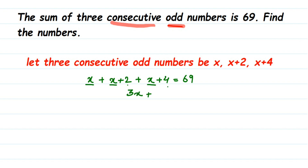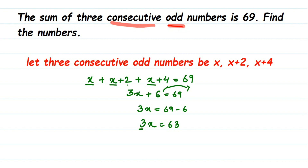Now bring all the constants to one side. Taking 6 to the other side, the sign changes from plus to minus: 3x equals 69 minus 6, which is 63. So 3x equals 63. To find x, transpose 3 to the other side — since 3 is in multiplication, it becomes division. So x equals 63 divided by 3. Using the 3 times table, 63 divided by 3 gives 21. Therefore x equals 21.